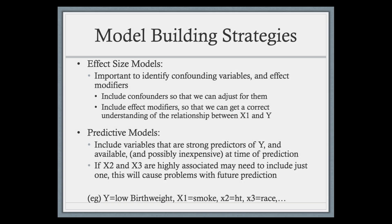For effect size models, we want to identify confounders and effect modifiers. We include confounders so we can adjust for them, and we include effect modifiers so that we can get a correct understanding of the relationship between the exposure and the outcome. In predictive models, our focus is really on getting variables that are strong or good predictors of the outcome.